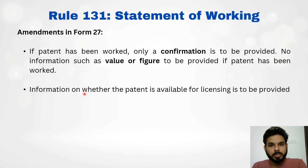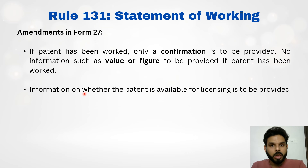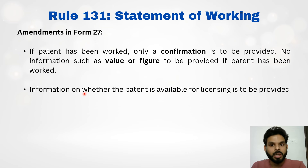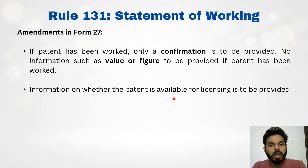There have also been amendments made to the content of Form 27 itself. In the previous Form 27, if your patent had worked, you were required to share details of how much the patent had worked — including value or figures. Now, no such detailed information is required. You just have to provide a confirmation of whether the patent has worked or not. Additionally, a new section has been added to Form 27 where you can indicate whether the patent is available for licensing — a tick mark if you are willing to license it, or 'no' if you are not interested.